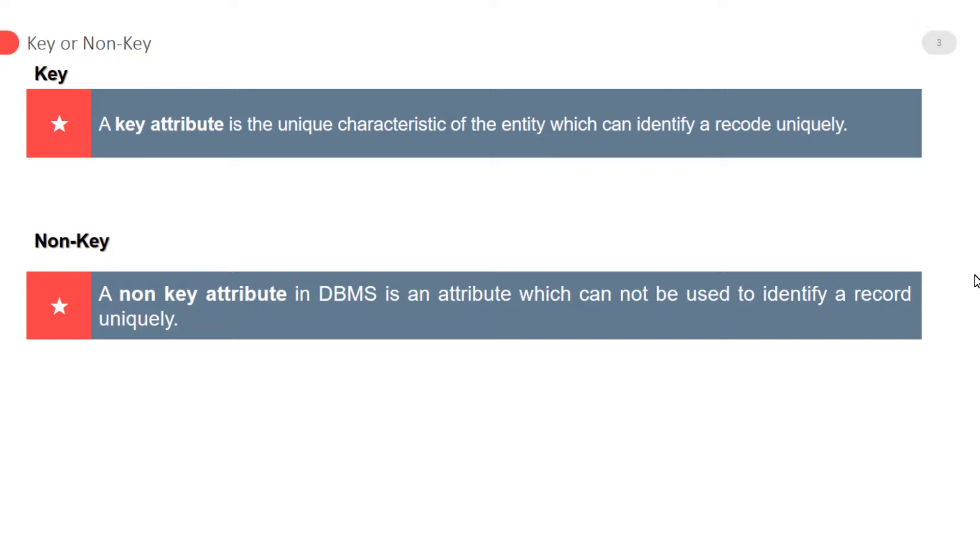For example, name attribute in an entity type student. It is possible to have more students with the same name.